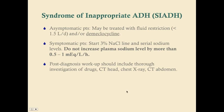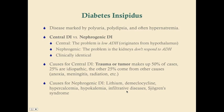Diabetes insipidus is the exact opposite of SIADH — here there is low ADH or low action of ADH, so there is essentially no water reabsorption. All fluid pours out through the urine, making this a disease marked by polyuria, polydipsia, and often hypernatremia. Nocturia is a distinguishing feature: at nighttime you shouldn't need to wake up to urinate since you aren't drinking water while sleeping, so nocturia more specifically points toward diabetes insipidus.